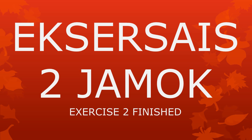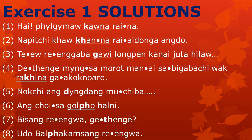Exercise done. Let me give you the solutions. Let's read them together. Please repeat after me. One: Hai pergumau kao naraik na. Two: Napichi kao kantna rayadonga angdo. Three: Te iure inga ba gawi longpenka nai juta hi lao. Four: De tenge mengsa murot mana isa bi gebak si wak rakina ga akok noaro. Five: No qi ang dingdang mu qi ba. Six: Ang choisa golpo balni. Seven: Bi sang re ingwa ga tenge. Eight: Udo balpakram sang re ingwa.